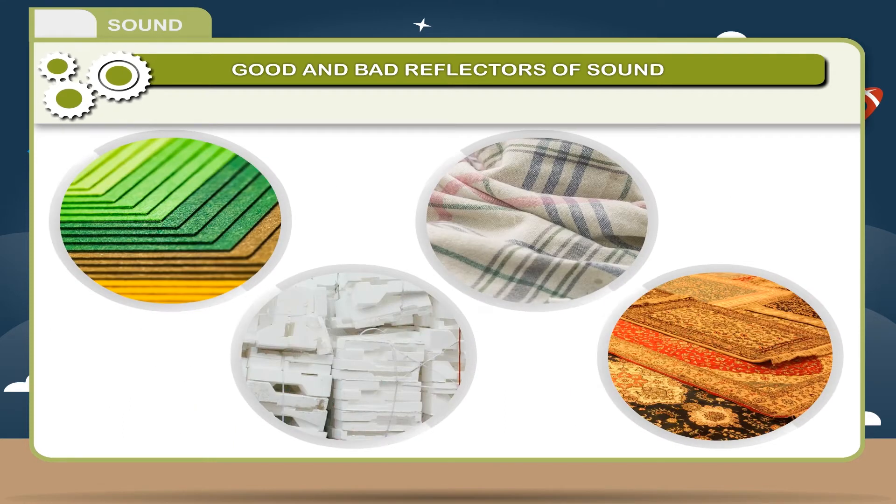Soft and porous materials like paper, thermocool, clothes and carpets are bad reflectors of sound. They are good absorbers of sound. These sound-absorbing materials reduce the reflection of sound and hence echoes are not formed.